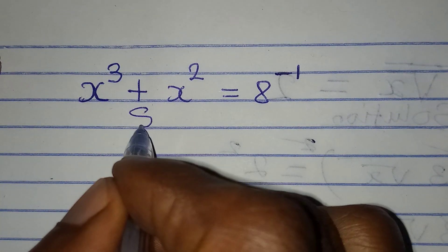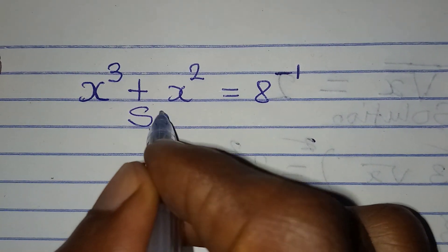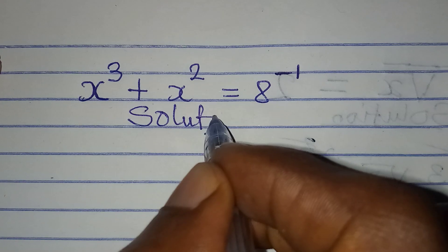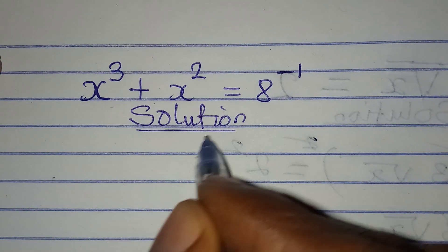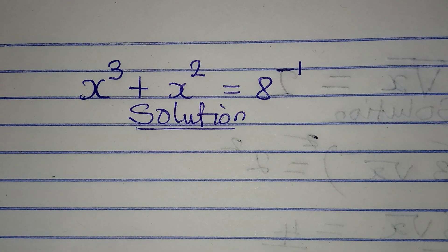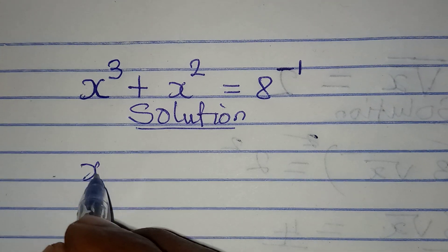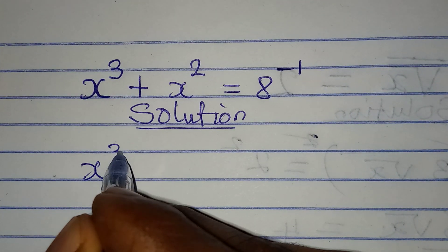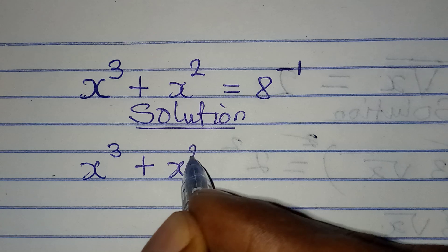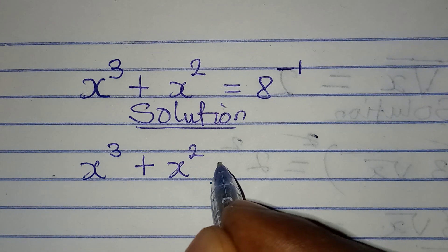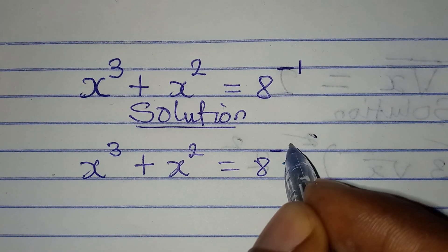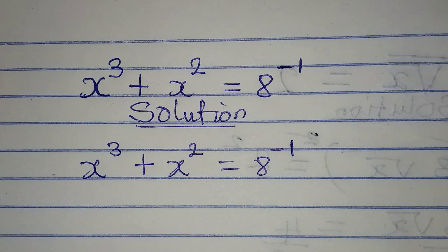Hello everyone, let's solve this problem on Olympiad Mathematics. We have x to the power of 3 plus x to the power of 2 equals 8 to the power of negative 1.